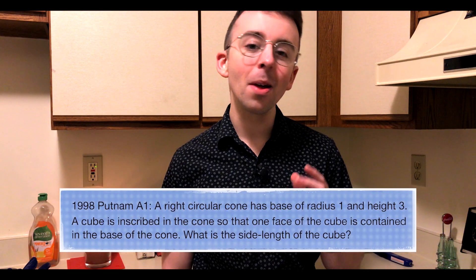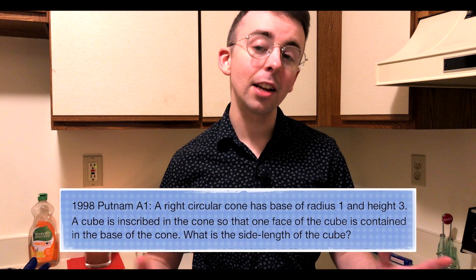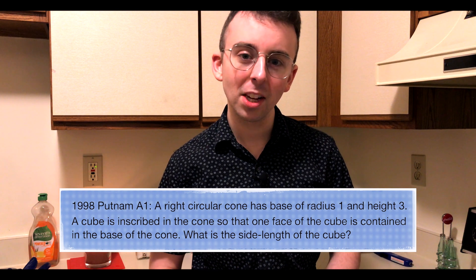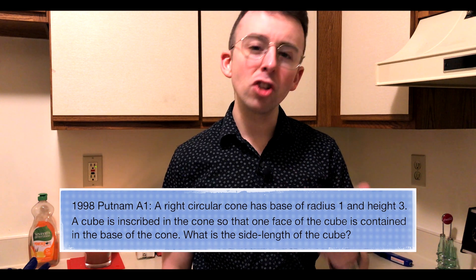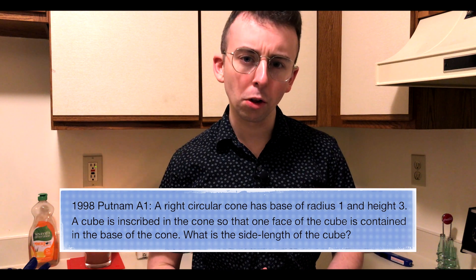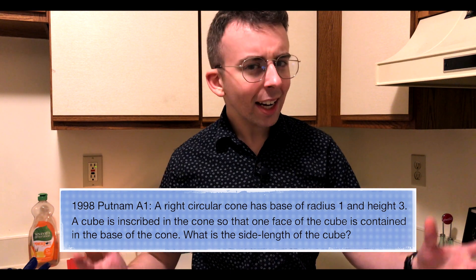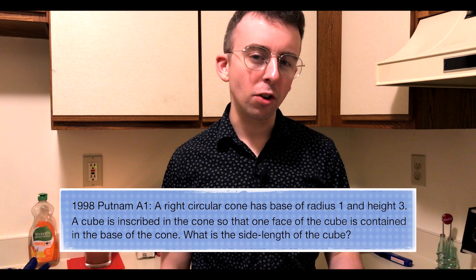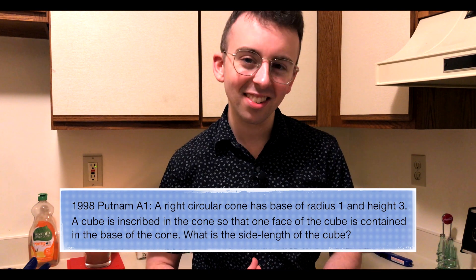Today we'll be solving the first problem from the first session of the 59th Putnam Competition, which was held in 1998. It's a geometry problem. It gives us a right circular cone and an inscribed cube. We've got a bit of information and we've got to use that information to solve for the side length of the cube.